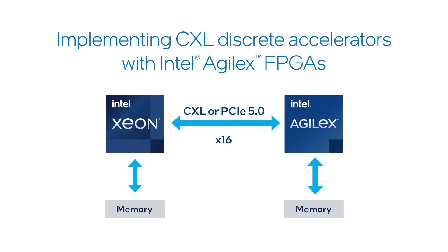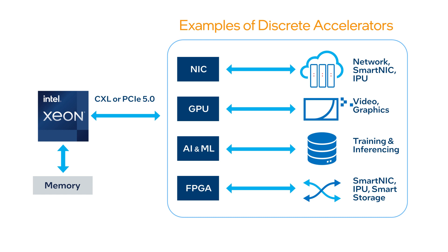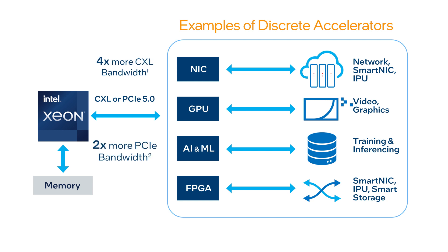Cloud service providers and millions of data centers demand more computing capability and access to more memory without stranding or isolating server resources. Use of accelerators have increased dramatically over the past several years, including built-in CPU accelerators, discrete accelerators, and software-based accelerators. Millions of Intel FPGAs are being used as PCIe connected discrete accelerators by data centers and enterprise customers around the world. The new Compute Express Link (CXL) protocol enables a new level of performance for FPGA-based discrete accelerators. Intel Agilex FPGAs provide four times more CXL bandwidth per port and two times more PCIe bandwidth per port.